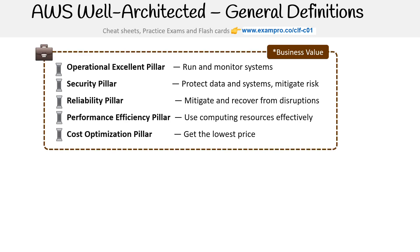I put an asterisk there because you might obsess saying we need to meet the requirements for all these pillars, and that's not the case. You can trade off pillars based on the business context. Don't take it as literally implement every single thing — just consider that you might have to adapt it based on your workloads.